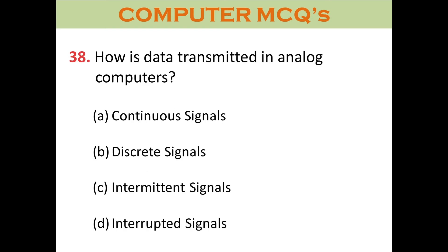Question thirty-eight: How is data transmitted in analog computers? A. Continuous signal. B. Discrete signal. C. Intermittent signals. D. Interrupted signal. The right answer is A: Continuous signals.